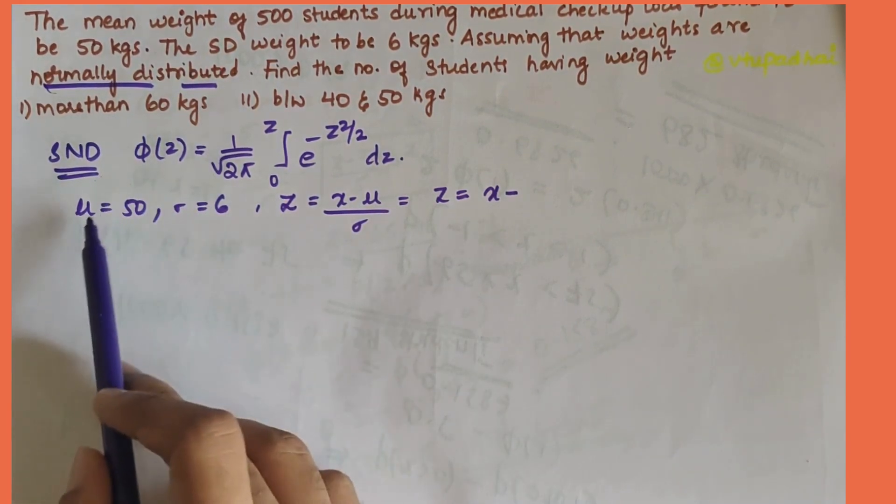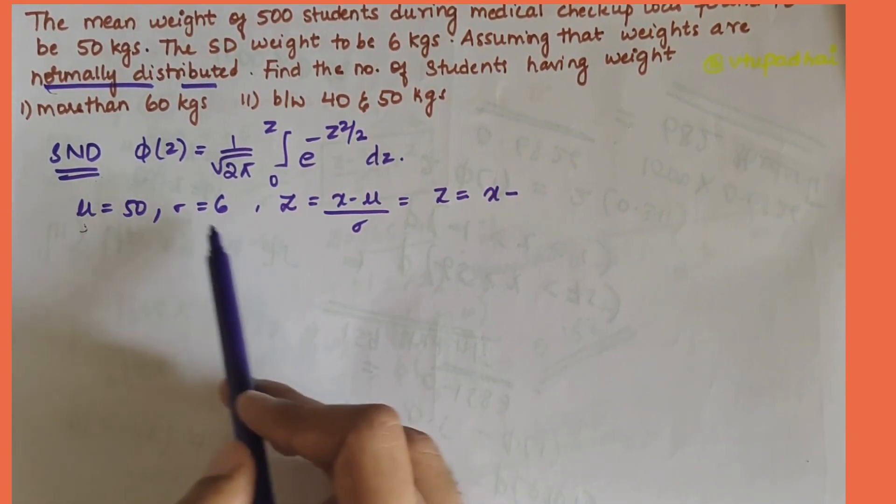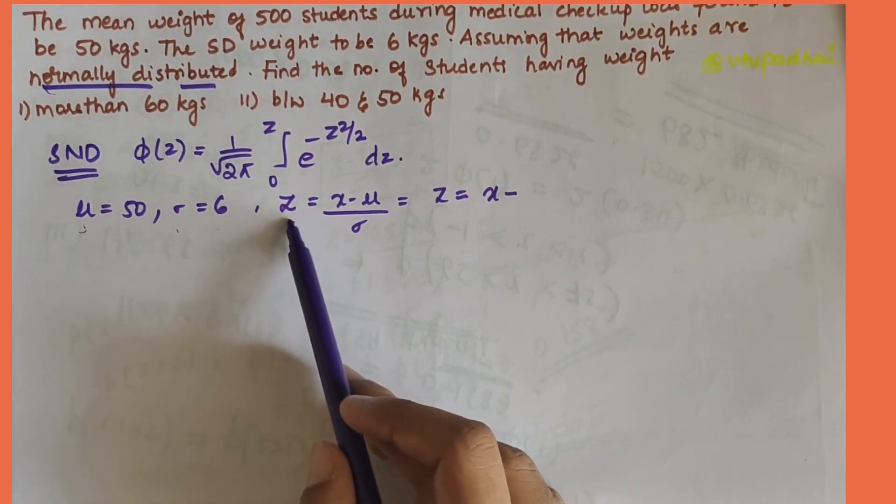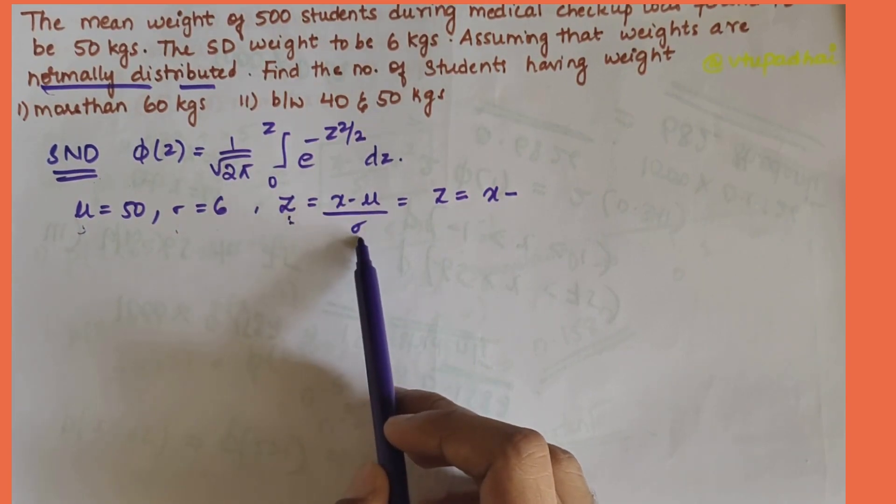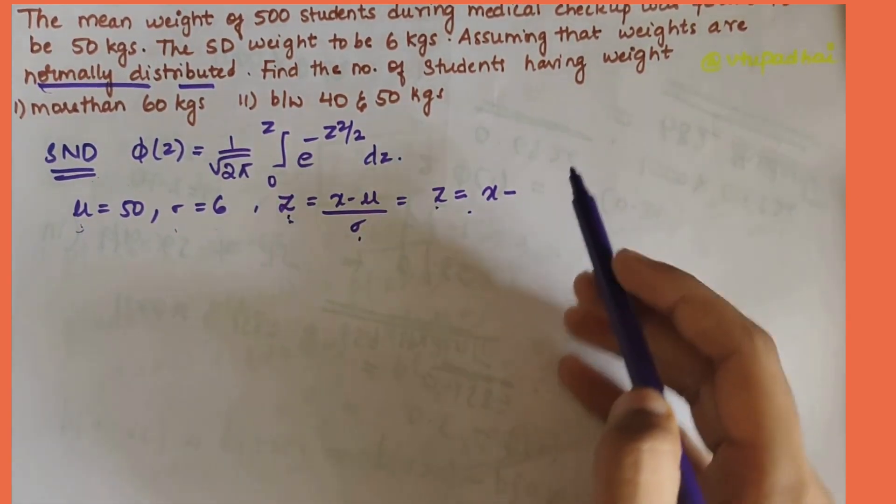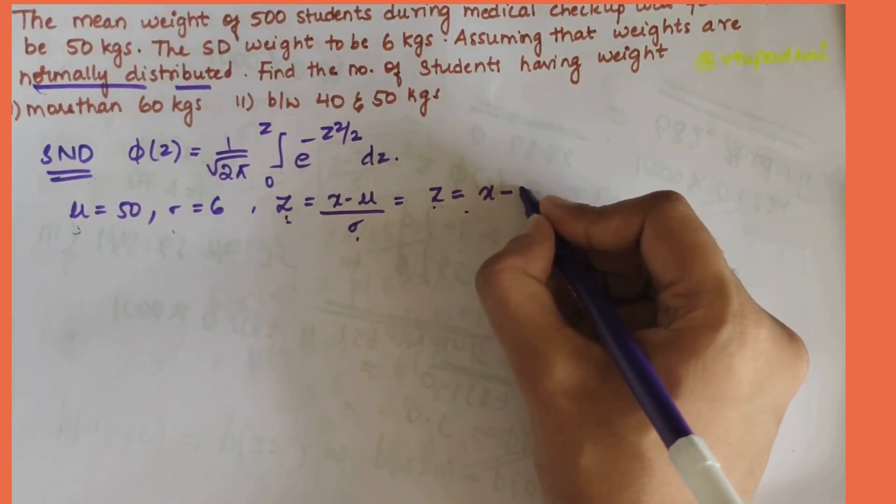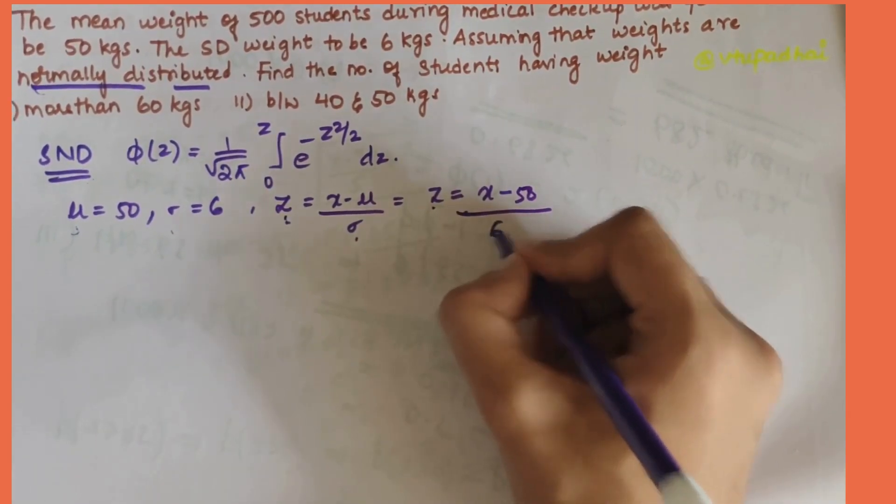Here we have from the given data, mean is equal to 50, standard deviation is equal to 6. The standard normal variate formula would be z is equal to x minus μ by σ. That is z is equal to x minus 50 by 6.